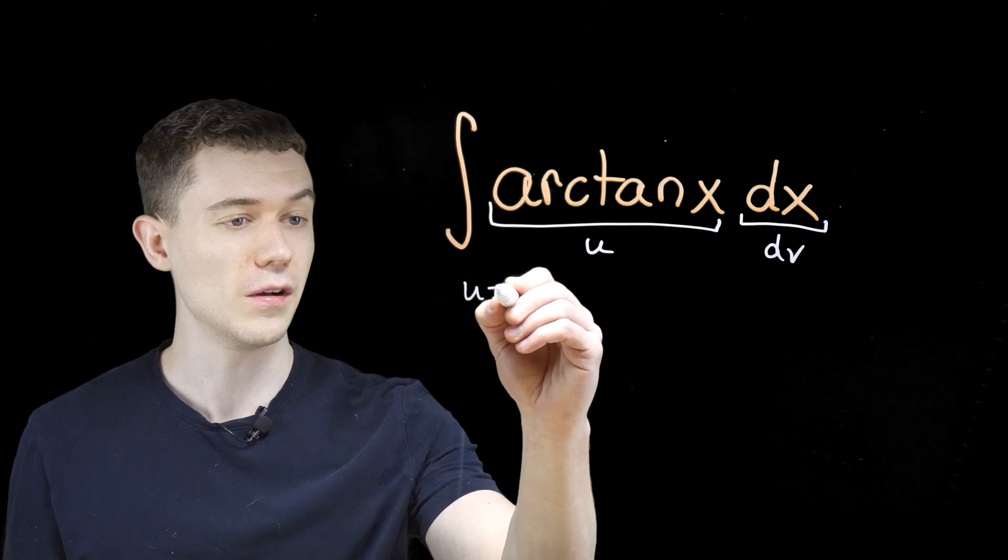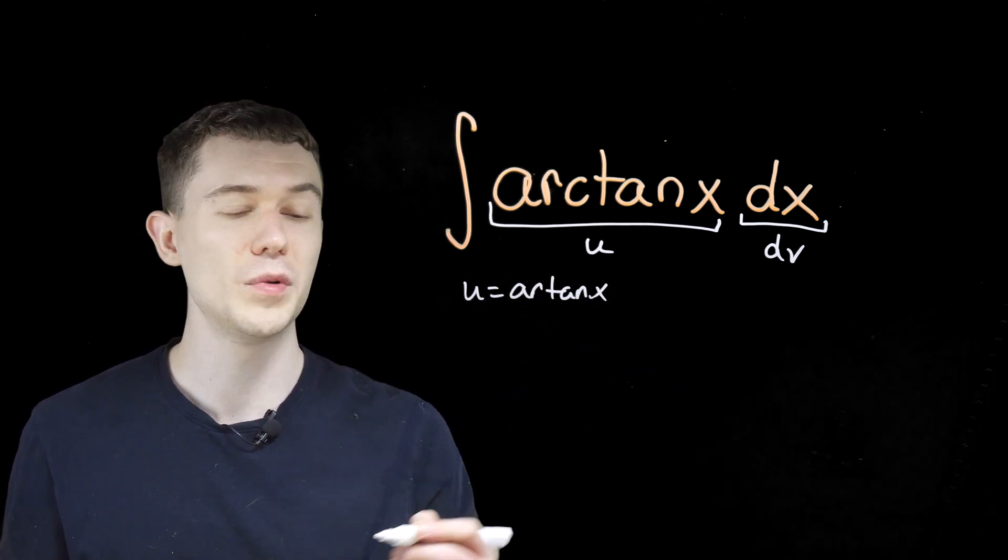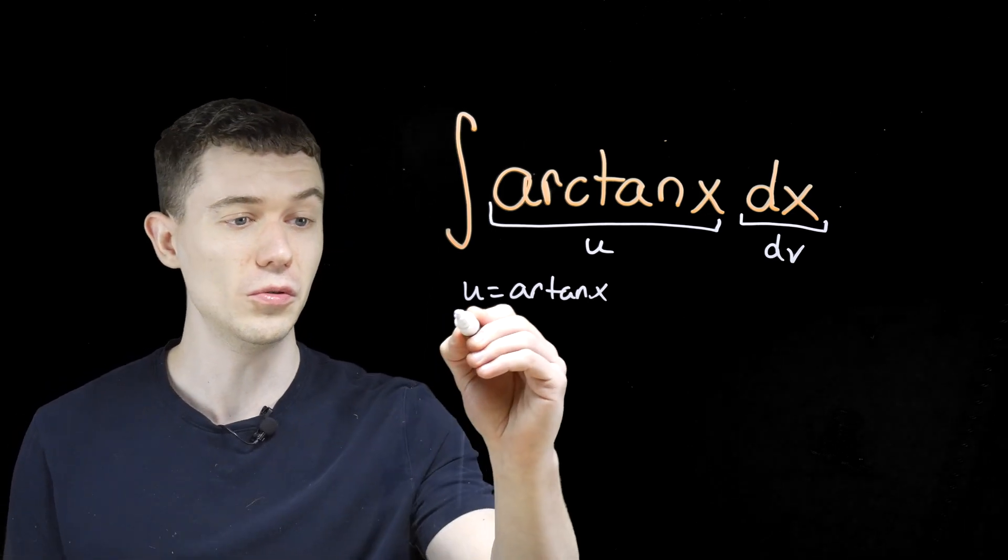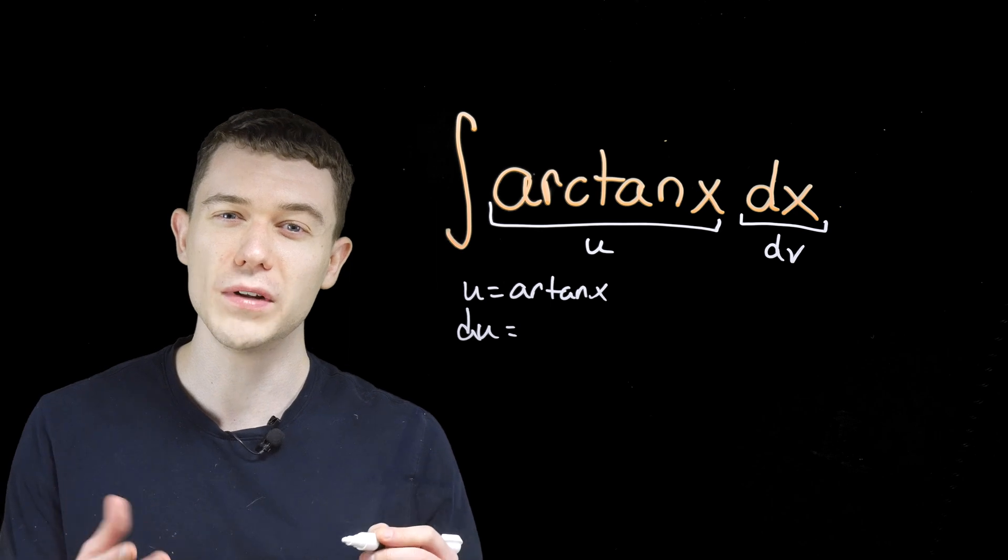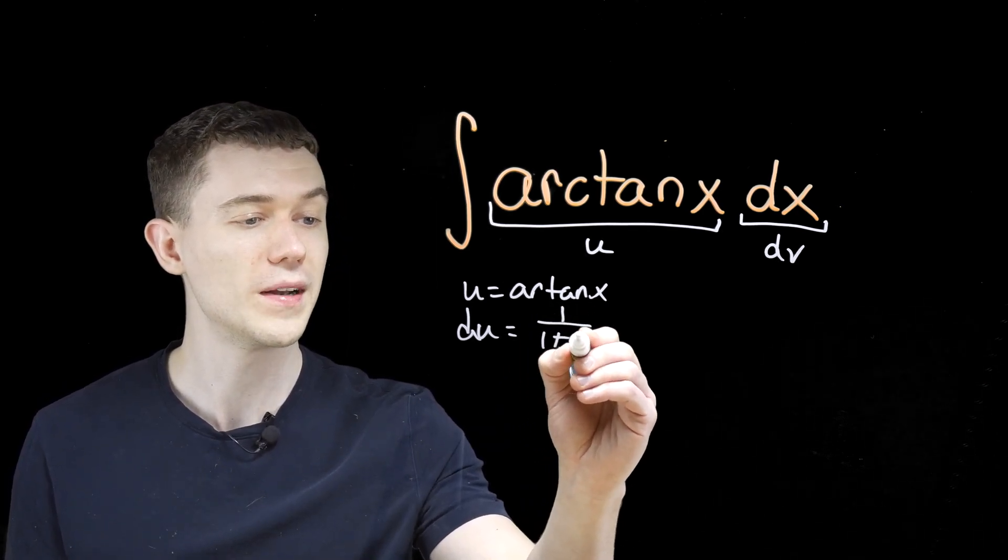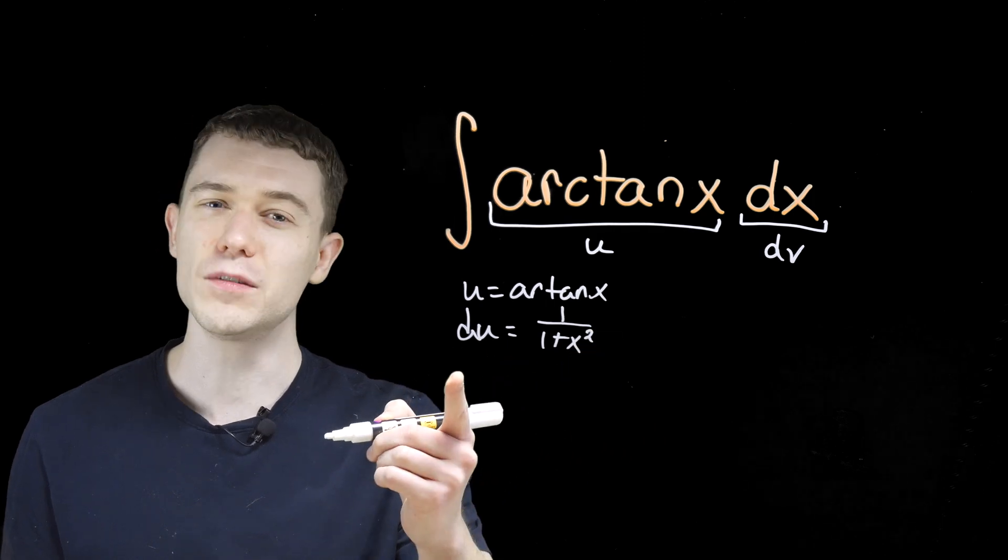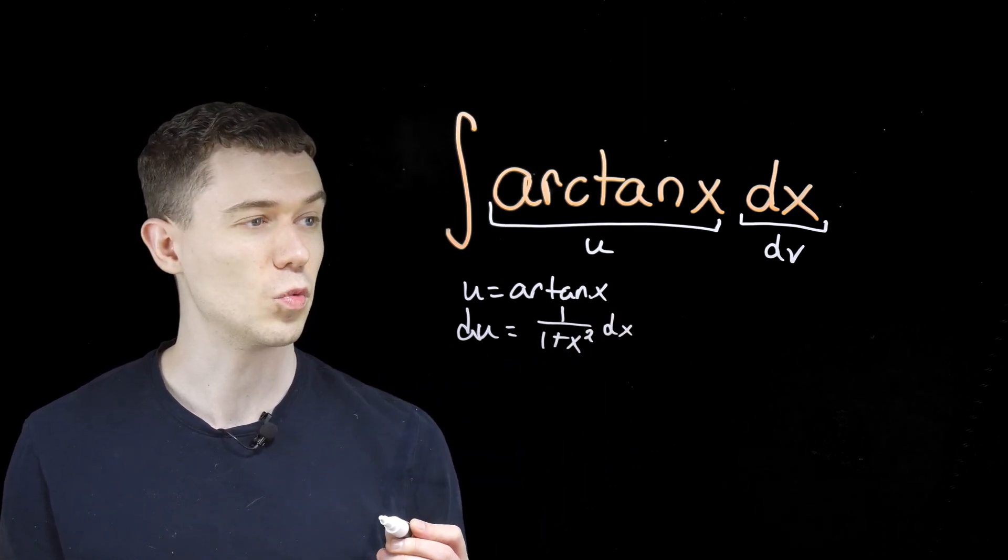So I'll write that here again for you. I'll let u be arctan(x). And we know when we select u, we need the du. Taking the derivative here, you have to remember the derivative of arc tangent x. That's 1 over 1 plus x squared. And since we're using differentials here, I really should put a dx here as well.